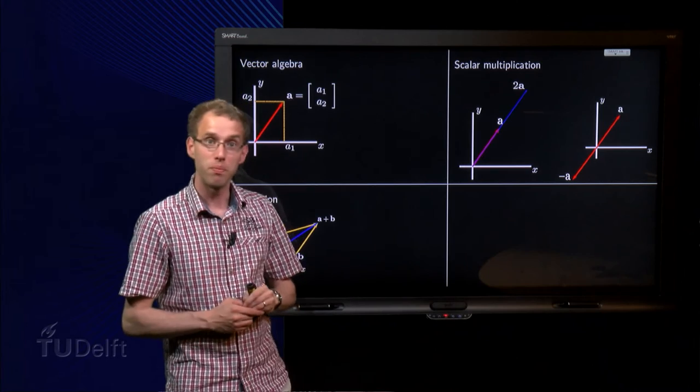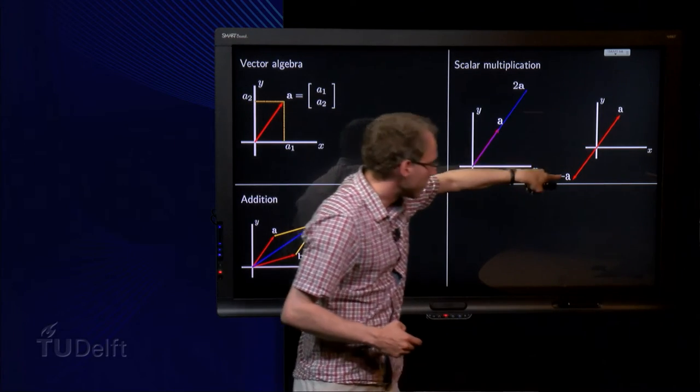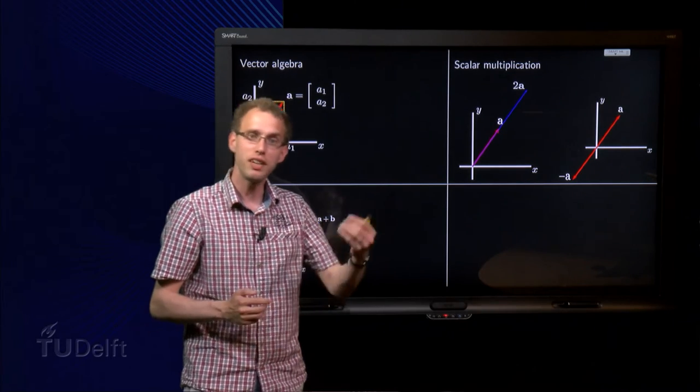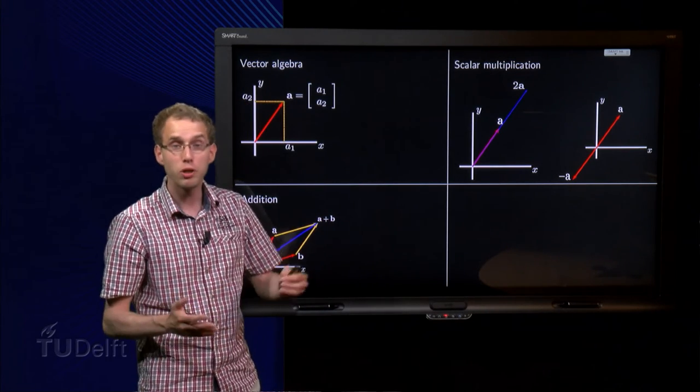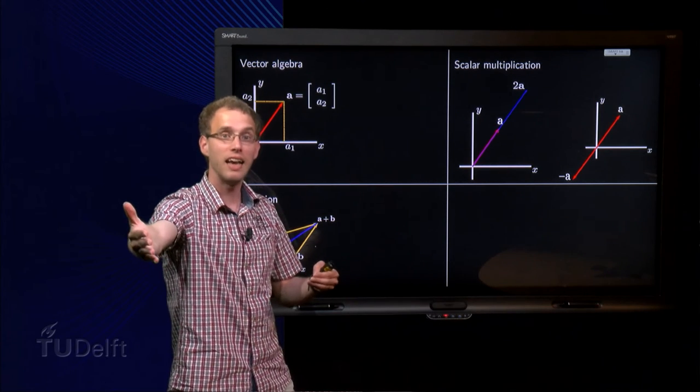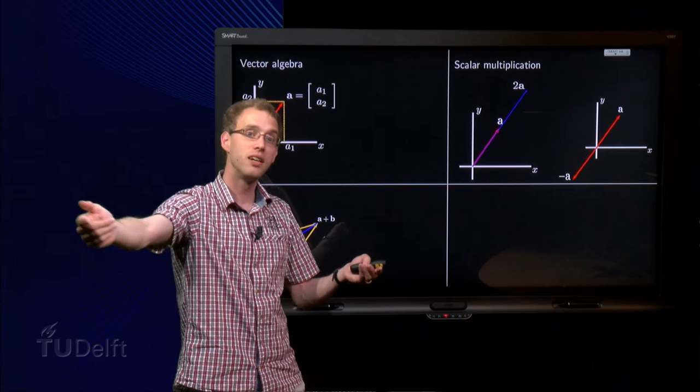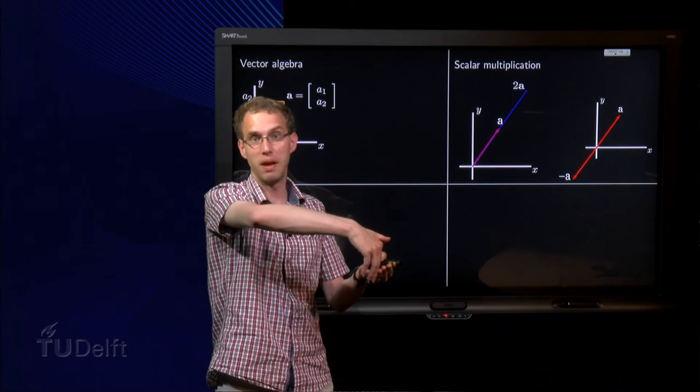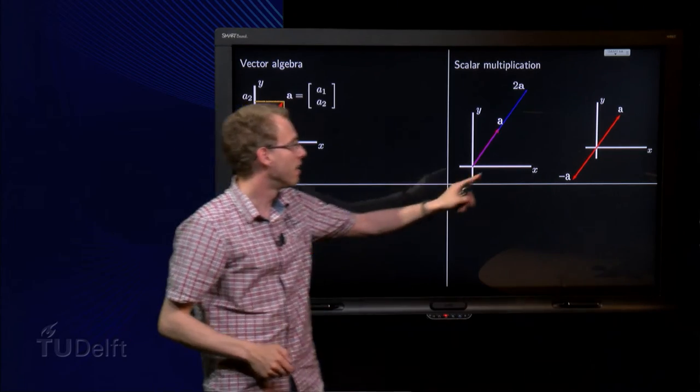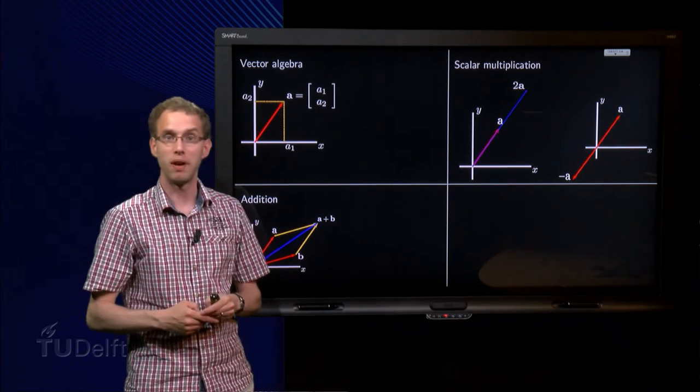Same for minus 1 times A. You just take A and you go exactly in the opposite direction. And if you think a bit of this, this probably also makes sense, because if you go first along a vector A, and then you go along minus A, you are exactly back where you started. So if you add them up, you end up at the origin again. So that is why you define minus A like this.